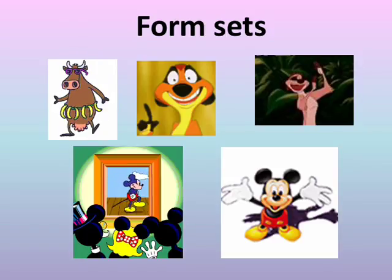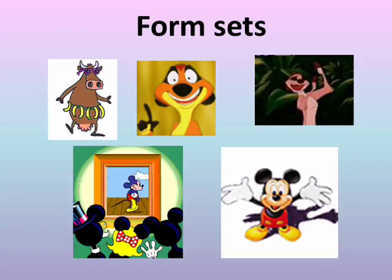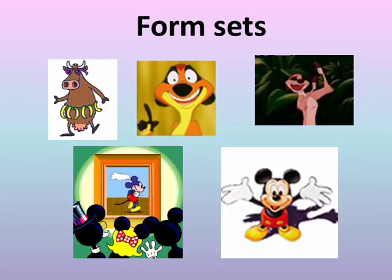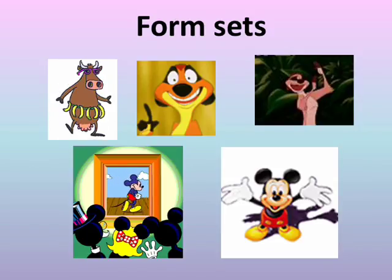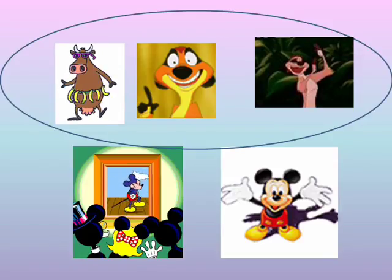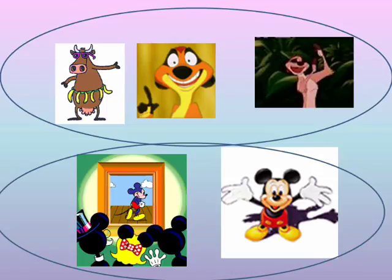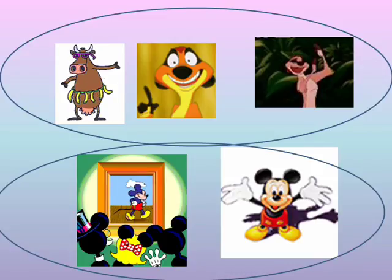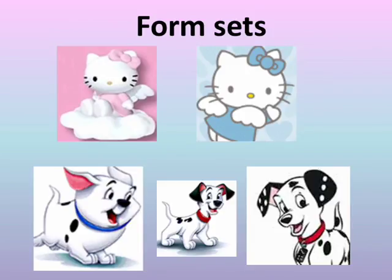We have two sets. Up, we have Timon and Pumba — three pictures. Form set. Down, we have two pictures of Mickey Mouse. So two sets: Timon and Pumba, and Mickey Mouse.